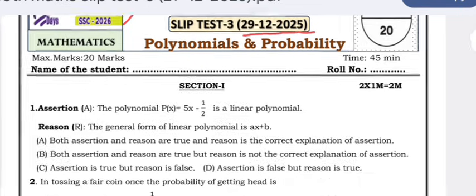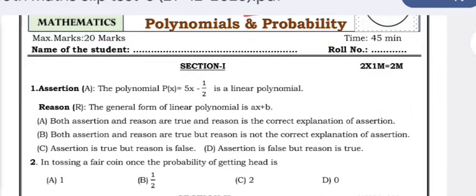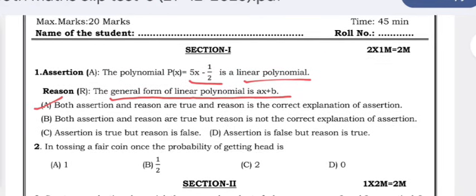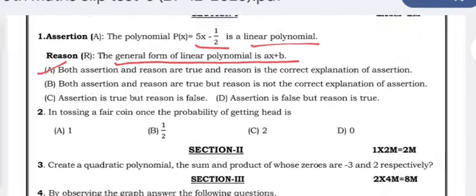The first question: the polynomial p(x) = 5x − 1/2 is a linear polynomial. The general form of a linear polynomial is ax + b. Both are correct. The answer is A — both assertion and reason are true, and the reason is the correct explanation of the assertion.